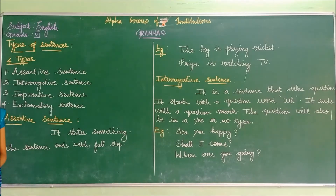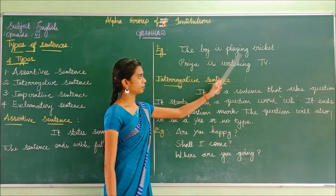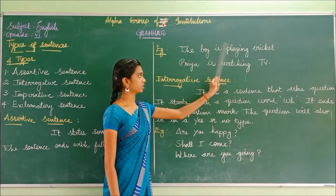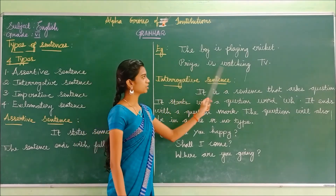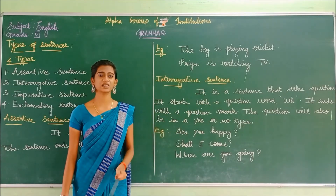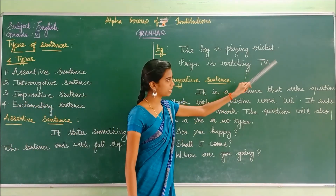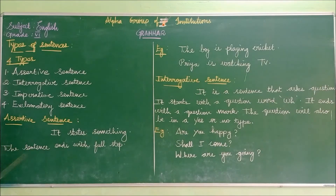In this class we are going to see about two types. The first one is the assertive sentence. What is meant by assertive sentence? It states something. The sentence ends with a full stop. For example: The boy is playing cricket — something has been stated. Priya is watching TV — something has been stated by Priya. So it is called the assertive sentence, and the sentence ends with a full stop.